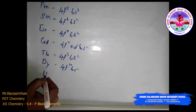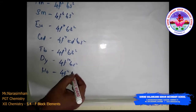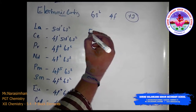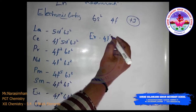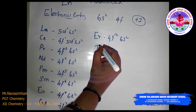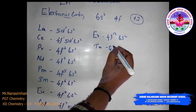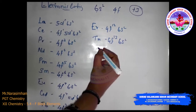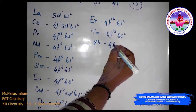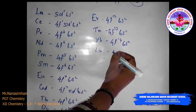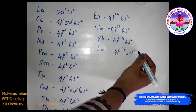Holmium (Ho) has 4F11, 6S2. Erbium (Er) has 4F12, 6S2. Thulium (Tm) has 4F13, 6S2. Ytterbium (Yb) has 4F14. Then the last element has 5D1 and 6S2.